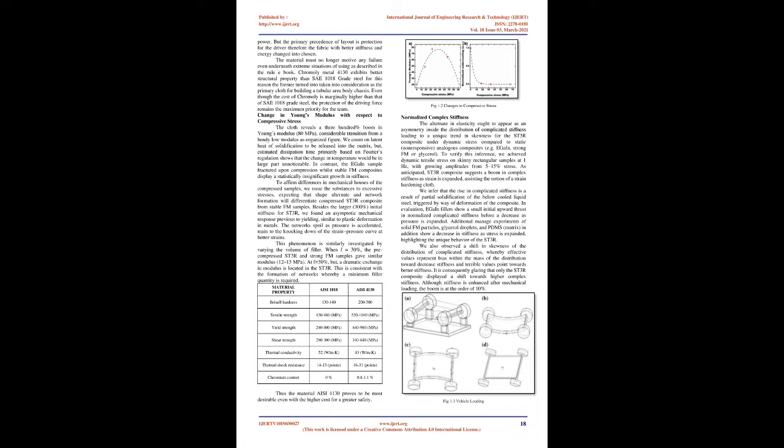Chromoly steel 4130 was selected for making the tubular space frame chassis for several reasons. SAE AISI-1018 grade steel is better in terms of thermal properties but weaker than chromoly in terms of strength. Since the primary priority of design is driver safety, the material with better stiffness and strength was chosen. Chromoly steel 4130 exhibits better structural properties than SAE AISI-1018 grade steel, and even though its cost is marginally higher, the safety of the driver remains the maximum priority.